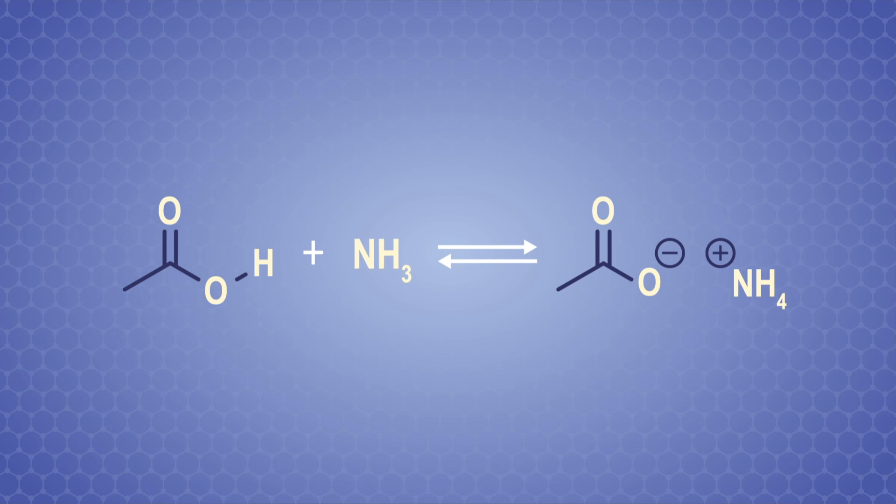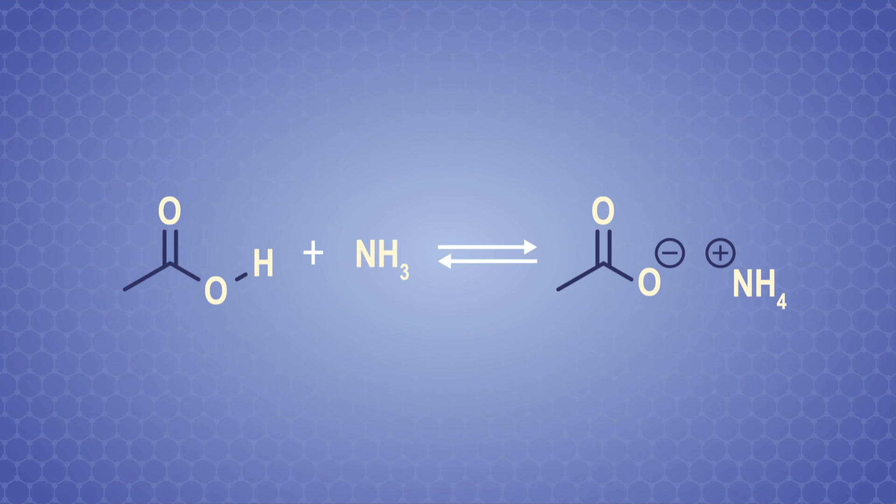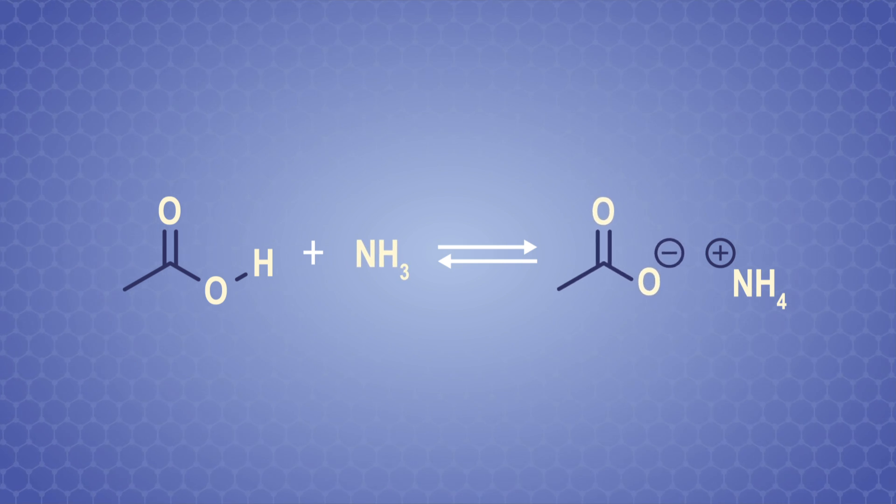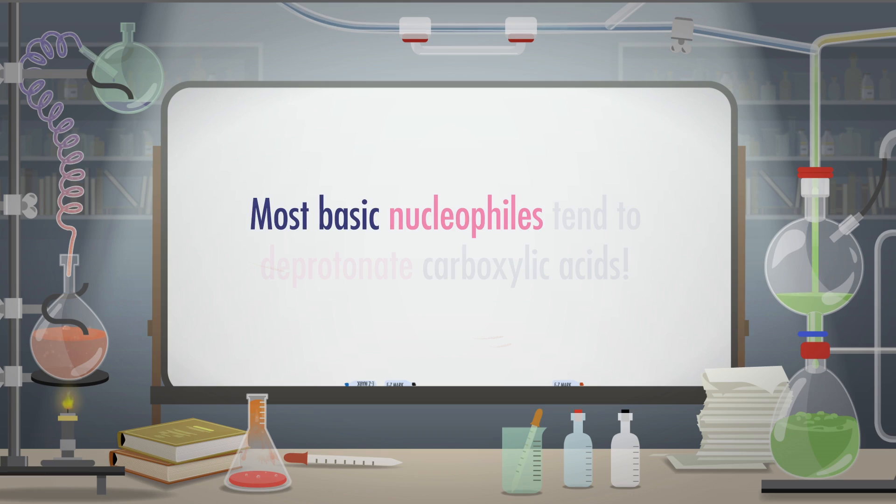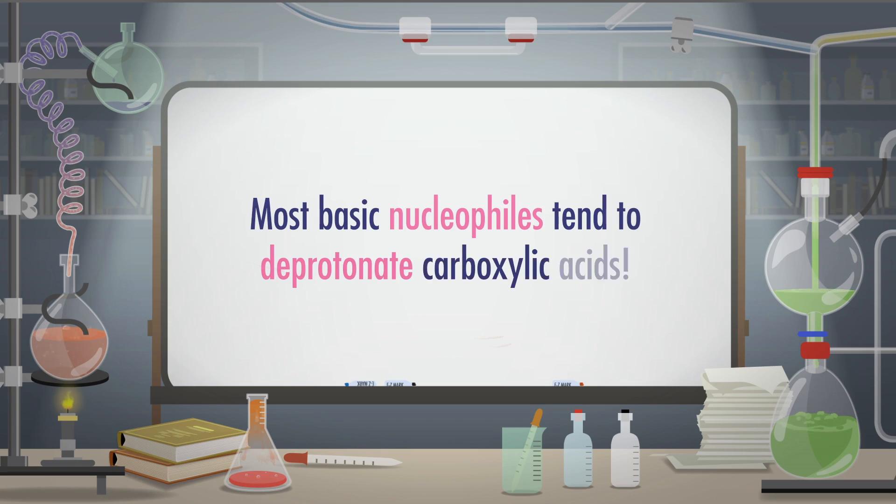In fact, even weak bases like ammonia can pull off a hydrogen ion and form a carboxylate ion. As we know from earlier episodes, both hydroxide ions and ammonia are good nucleophiles. This actually highlights an issue that can come up in the lab – most basic nucleophiles tend to deprotonate carboxylic acids. So, unlike aldehydes and ketones, we can't just use a nucleophile to add groups to the carbonyl carbon here – we'll have to get a little more creative with our chemistry.